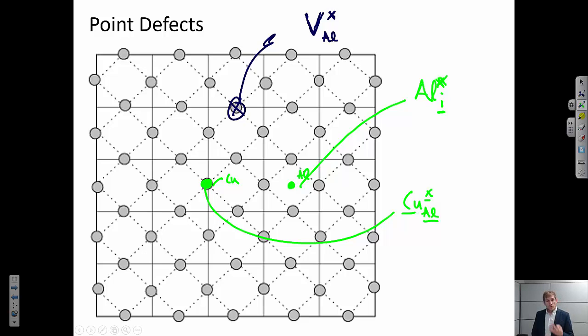So these are the three different kinds of point defects. We have vacancies, we have interstitials, and we have substitutions.